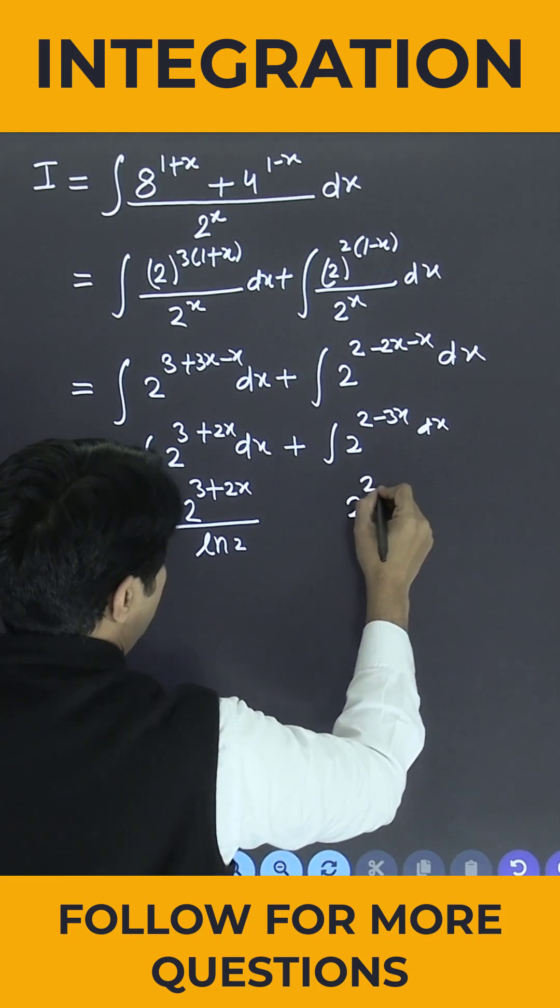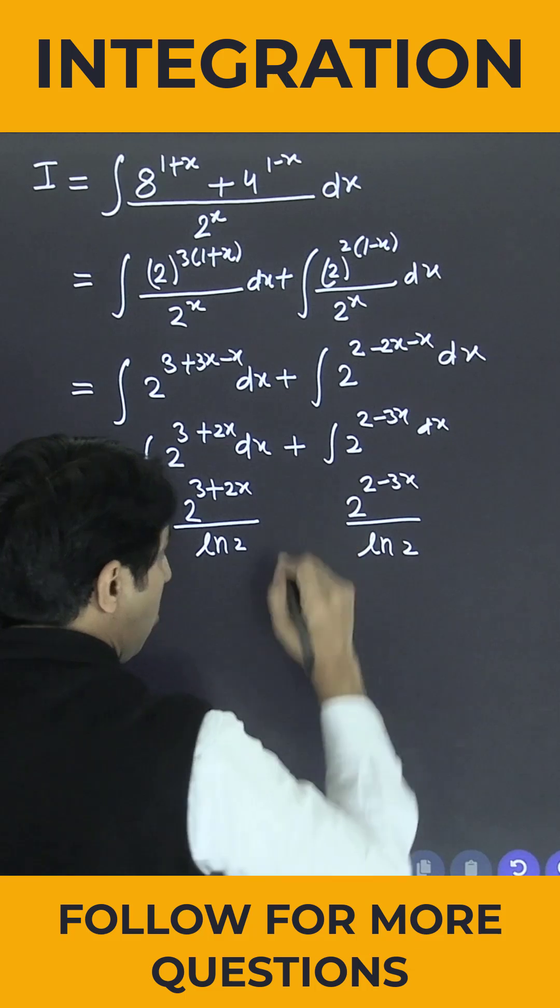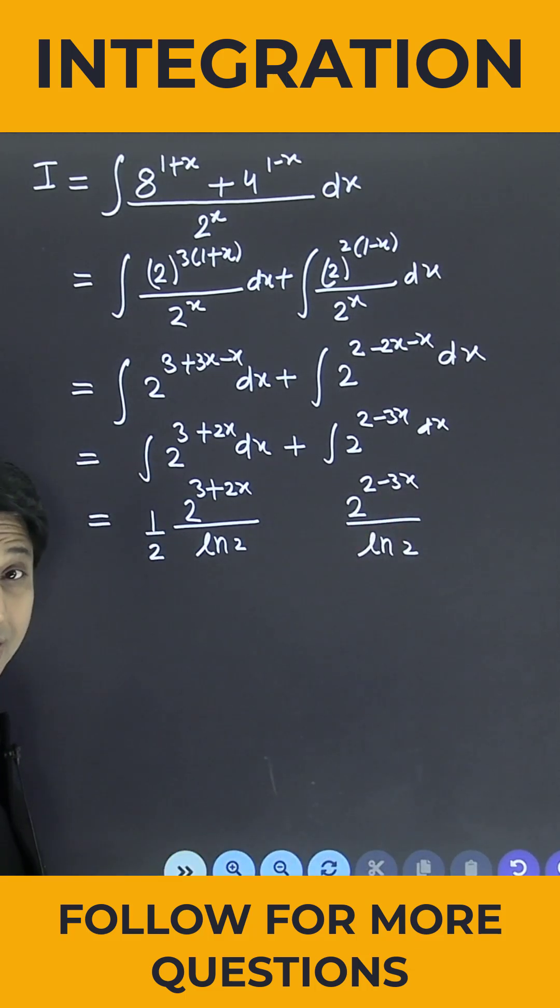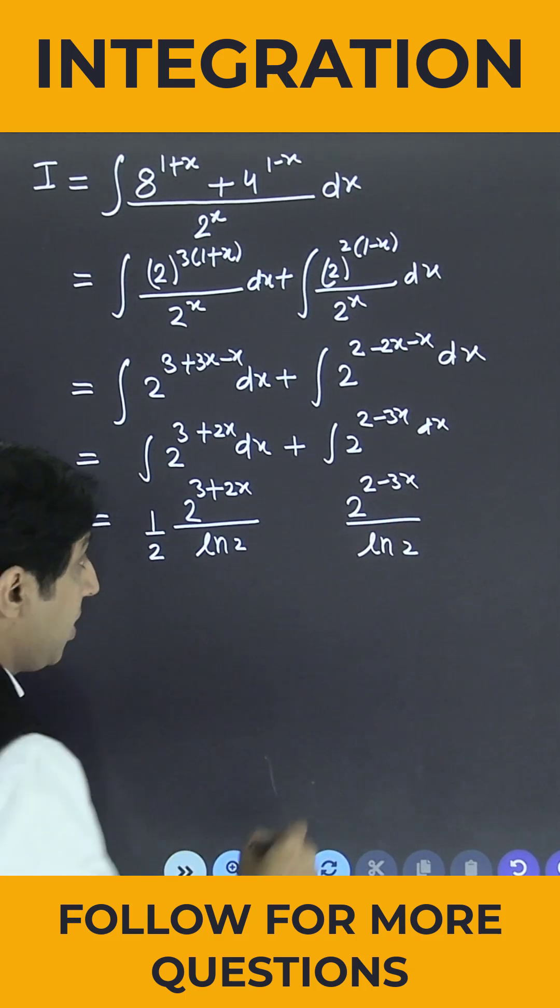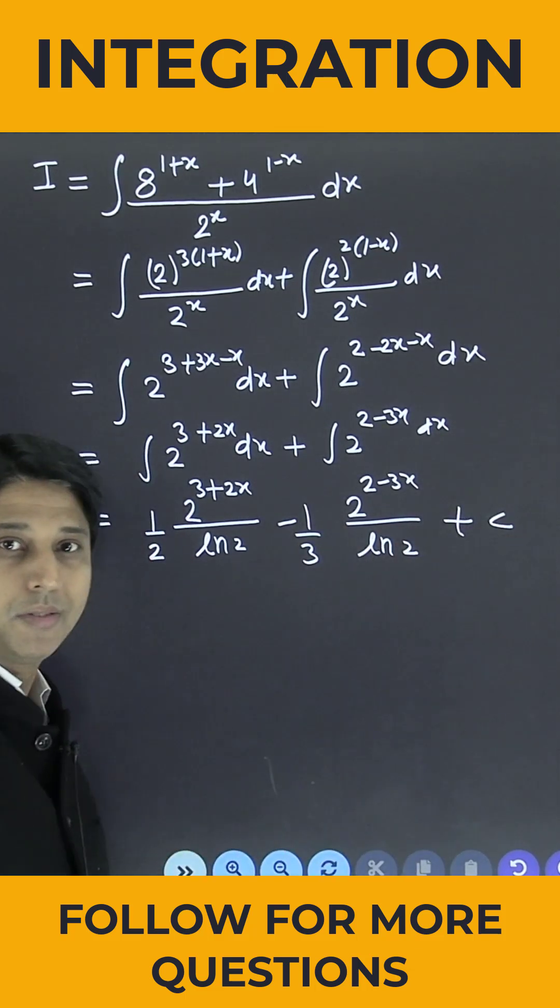Similarly, 2 to the power 2 minus 3x, divided by ln 2. What is the coefficient of x? It is minus 3, so it will come in the denominator. So minus 1 by 3, plus c, is the answer. Thank you.